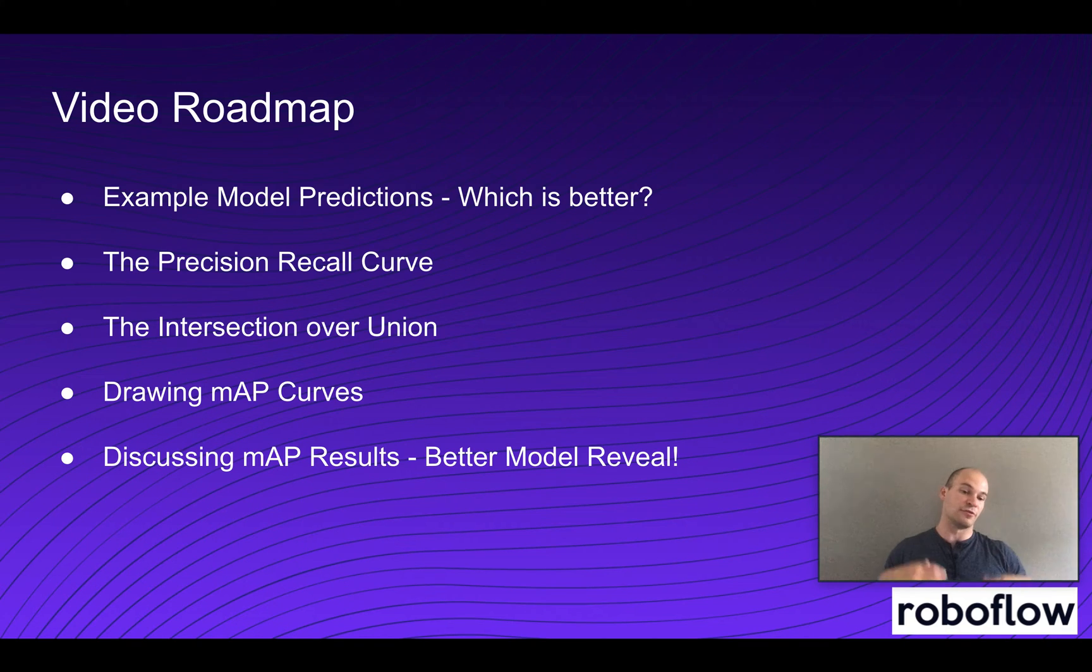Once we've gone through the theory of what MAP is, we're going to put it into practice again by looking at our models that are inferencing in our inference example, and we're going to determine which model is actually better using the MAP metric in practice.